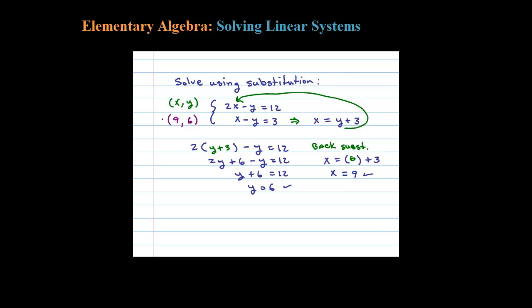When y is 6, x is 9, so the answer is (9, 6) — that's the point where the two lines cross. Let's check: 2 times 9 is 18, and 18 minus 6 is certainly 12, so that solves the first equation. For the second equation, 9 minus 6 is 3. This solution satisfies both equations at the same time.